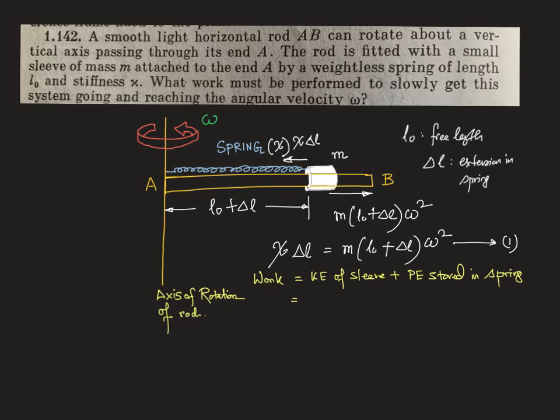The kinetic energy of the sleeve is half m v squared, where v is (l0 plus delta l) times omega, so that's half m times (l0 plus delta l) squared times omega squared, plus half chi times delta l squared.